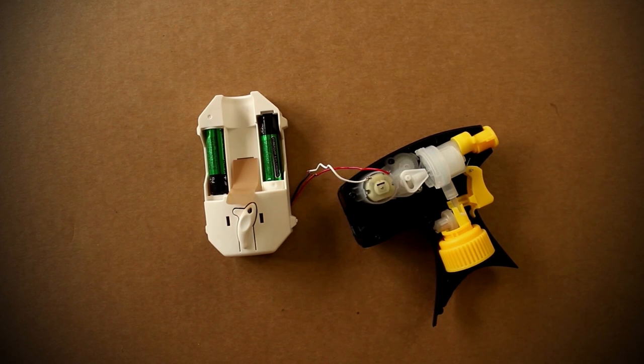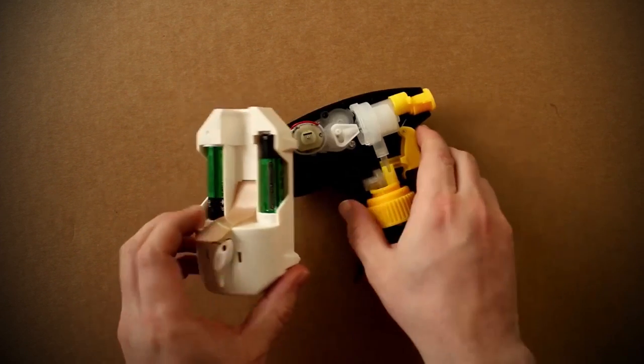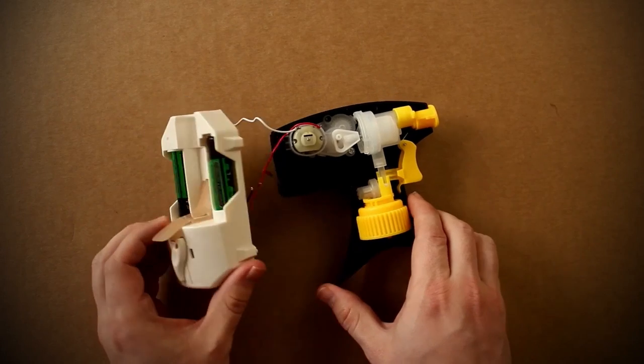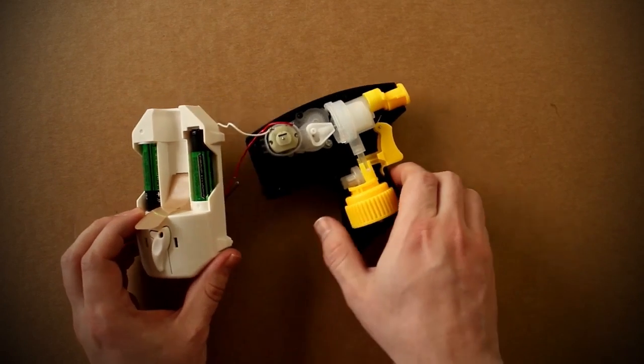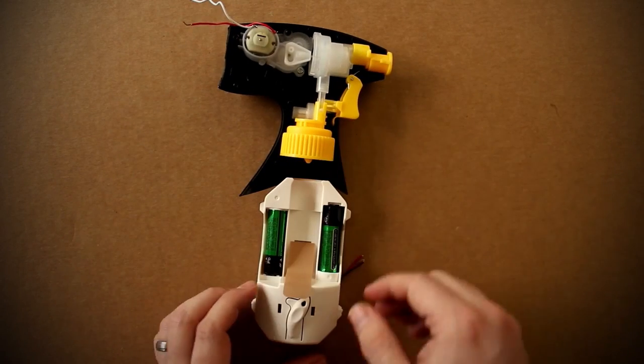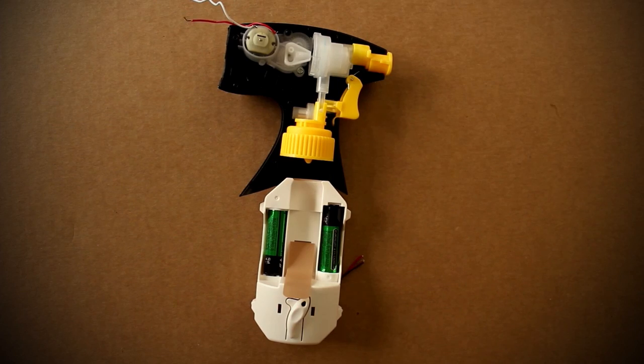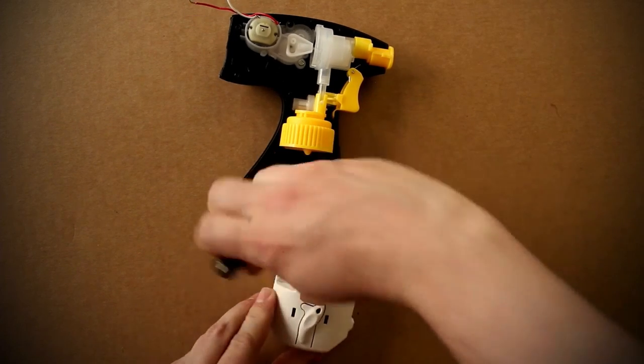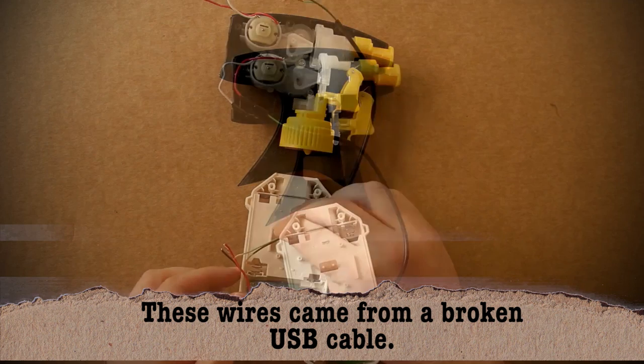It does what we want. Now we just need to make it look good. What would be nice is if the sprayer could sit on top of the air freshener, but the wires currently are too short. So removing the batteries again, we can add some extra wire to extend it.